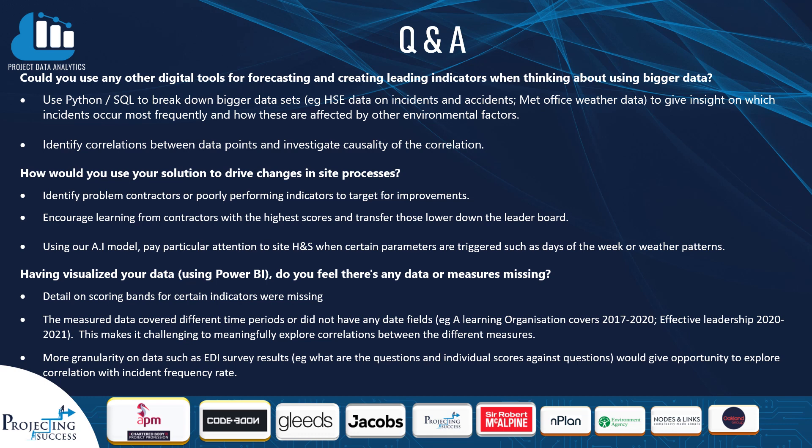How would you use your solution to drive changes in site processes? Our solution shows users where problem contractors or poorly performing scoring categories exist, so improvements to standards can be made. By identifying high-scoring contractors, we can take best practices and share them with other suppliers. Using our AI model, we can also pay particular attention to when certain parameters are triggered, such as the day of the week or weather patterns.